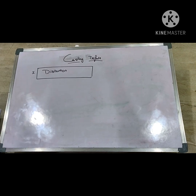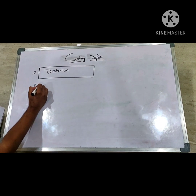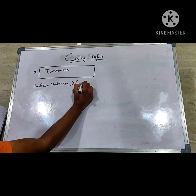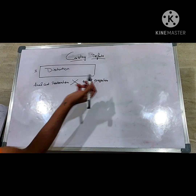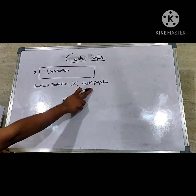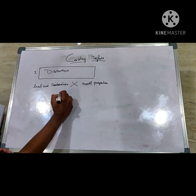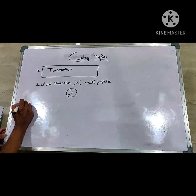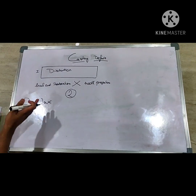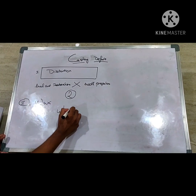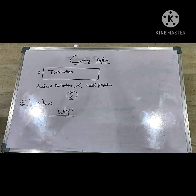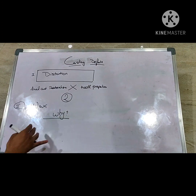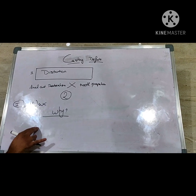The first defect is distortion. Distortion is when your final cast restoration does not match the tooth preparation you have done for casting. This depends on two factors. The first factor is the wax itself — the wax used to make the wax pattern. Every material has a kind of memory, and this investment wax also has a memory. So if the wax pattern gets distorted, the final cast restoration will also get distorted.